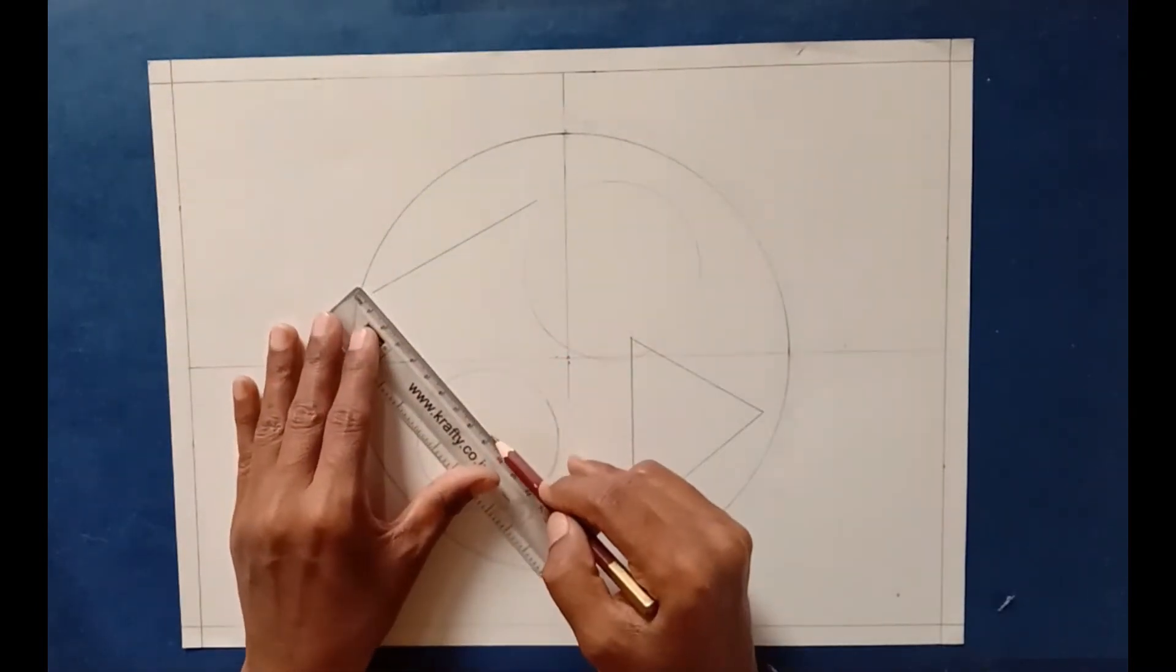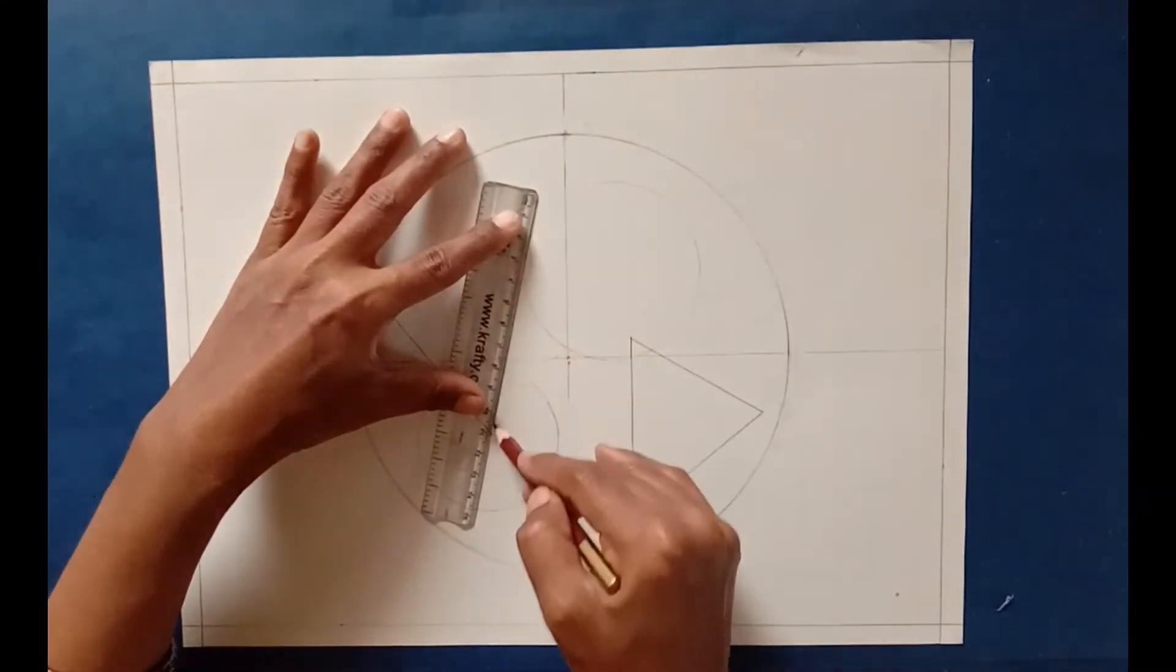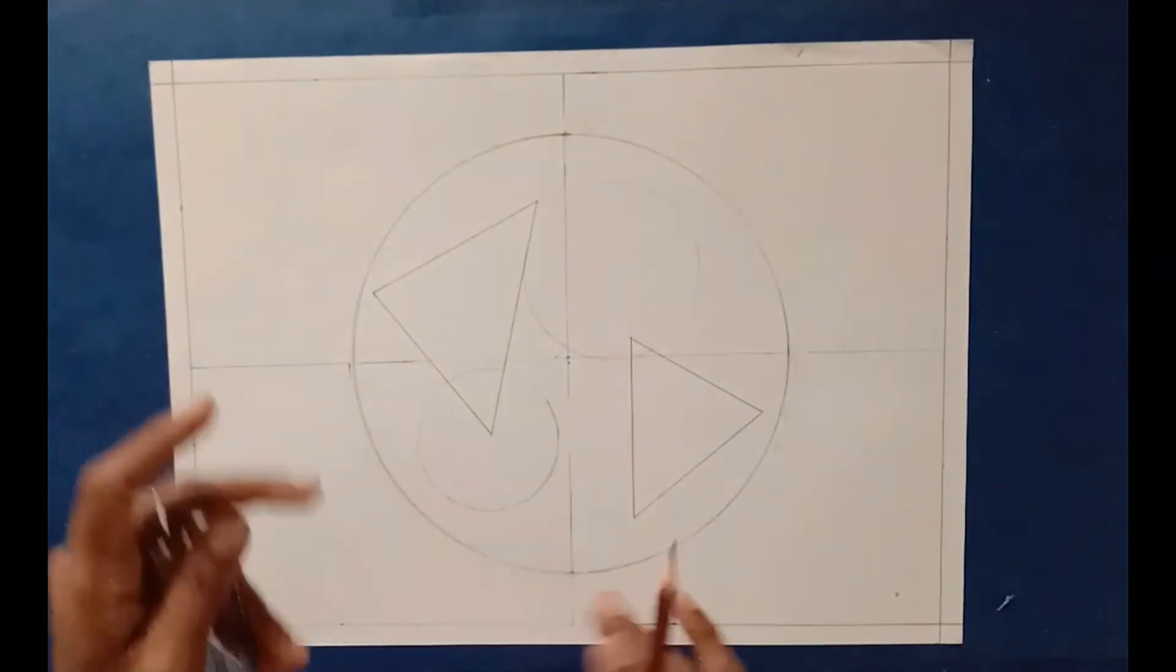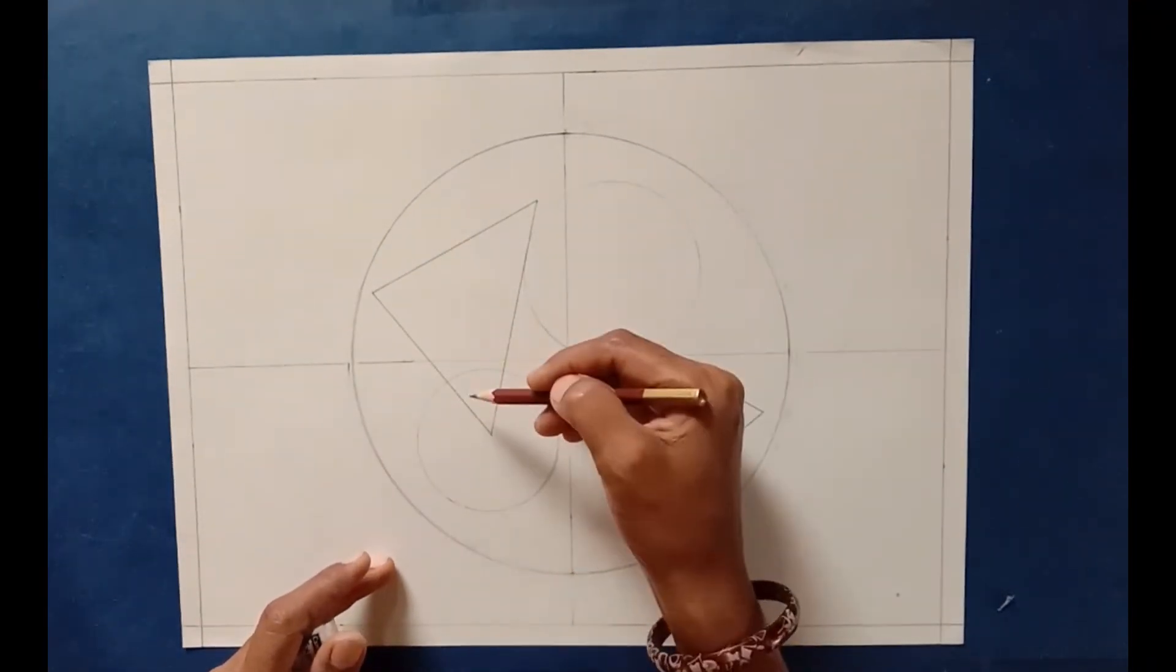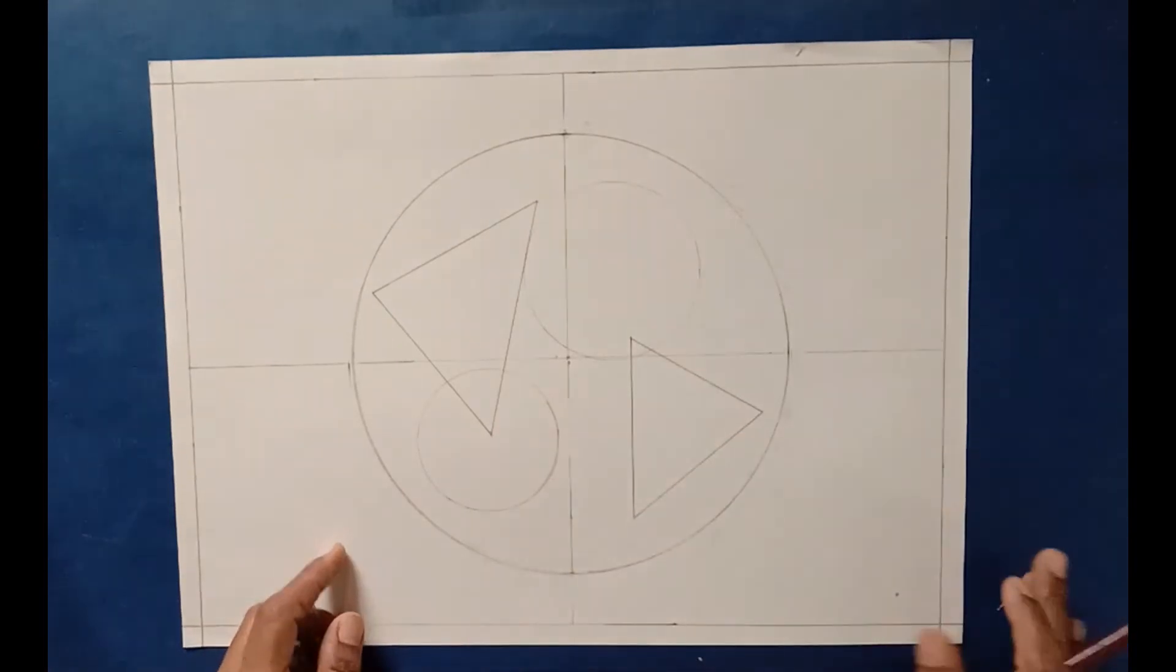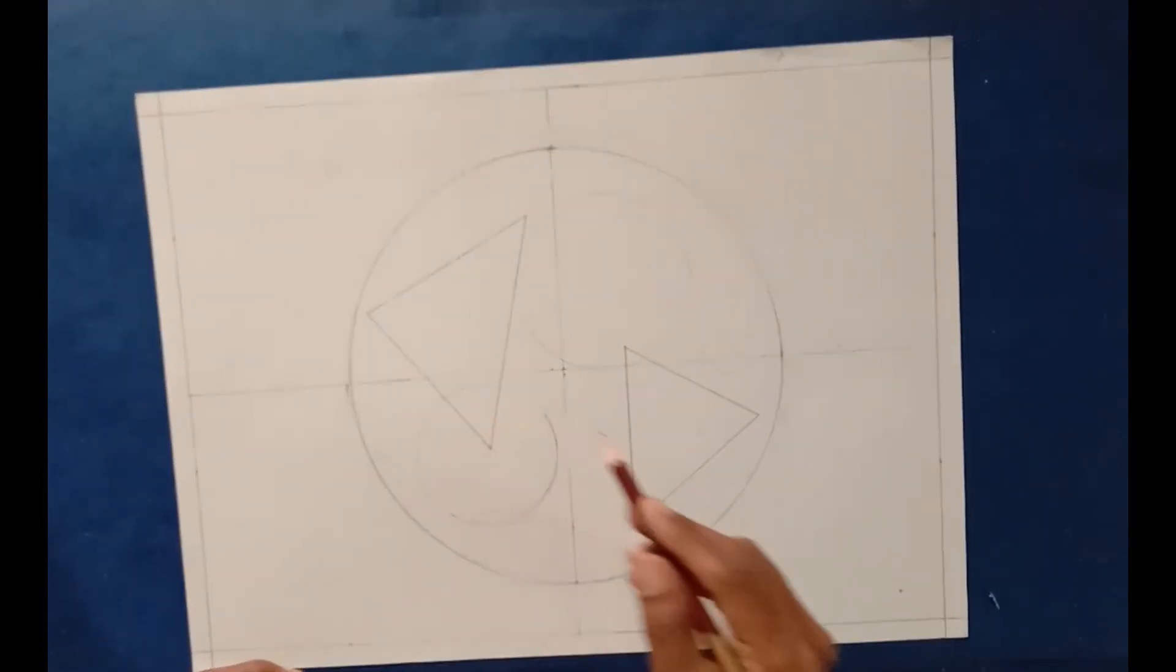This is called overlapping. Overlapping is when one object is drawn or any shape is drawn. For example, this circle is already done, on the top I did one triangle. This is called overlapping. So here I did two circles and two triangles.